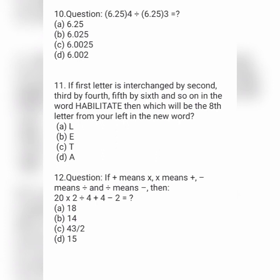Next question: if plus means into, into means plus, minus means division, and division means minus, then calculate: 20 into 2 divided by 4 plus 4 minus 2. Option A is 18, option B is 14, option C is 43/2, and option D is 15.